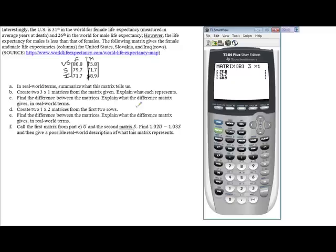We want to find the difference between the two matrices and explain what the difference matrix gives in real world terms. So we'll do A minus matrix B. And so that gives me 5, 8, and 2.8.